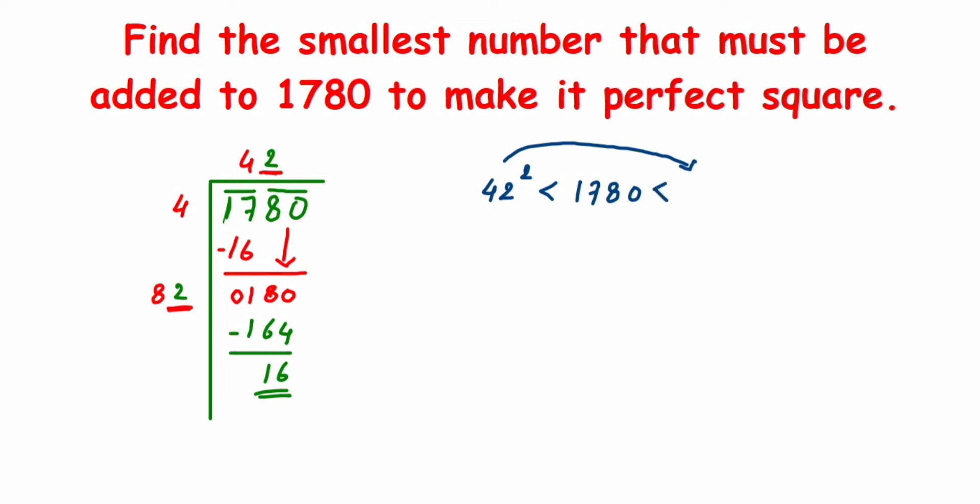42 square is a perfect square. The next perfect square will be 43 square. So 42 square is less than 1780, and the next perfect square will be 43 square.